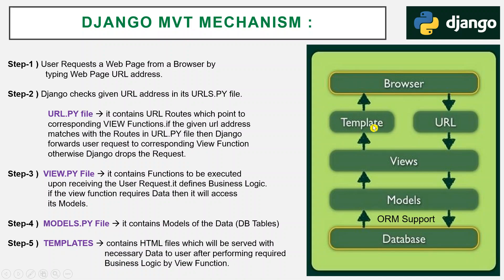The view function provides data mixed with business logic to the template layer. T means template, M means model, V means view — that is MVT. The template is simply an HTML document. After the request goes through all these stages, the response is prepared, served onto the HTML document, and the HTML document is served to the web browser, which decodes all the HTML and displays it on screen.